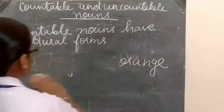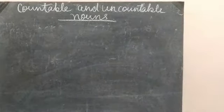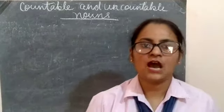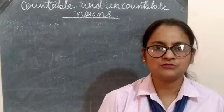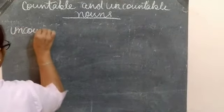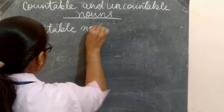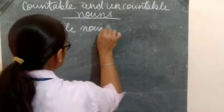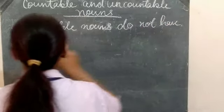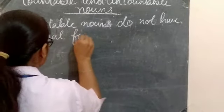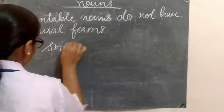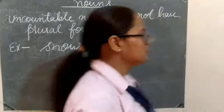Now the next is uncountable nouns. Things that cannot be counted are called uncountable nouns. Uncountable nouns do not have plural forms. For example, snow — can we say one snow, two snow, three snow? No. So snow is an uncountable noun.